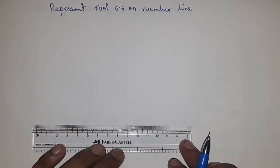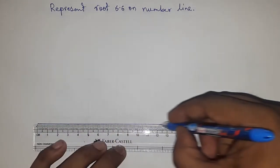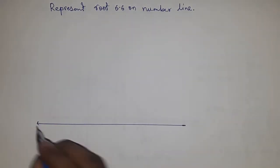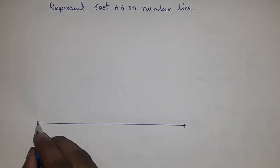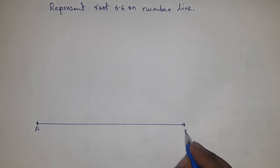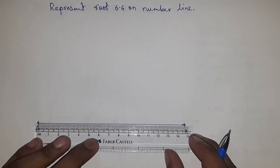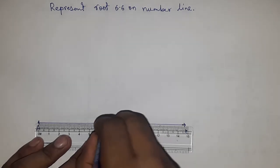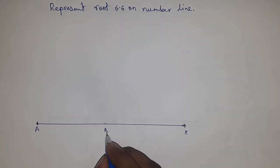First of all, drawing a line of any length here. This is the AX line. Next, taking a length of 6.6 cm by scale, and this is point B.